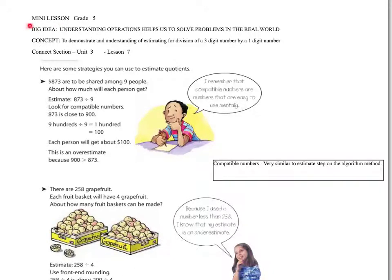All right, grade five. We are continuing with our big idea of understanding operations helps us to solve problems in the real world. Our concept today is to demonstrate an understanding of estimating for division with a three-digit number by a one-digit number divisor. Estimation strategies are a little bit different for division than they are for multiplication, addition, and subtraction. It's a little more limited as to what works well, and we'll discuss this.